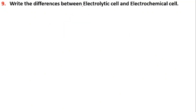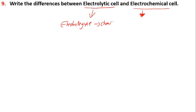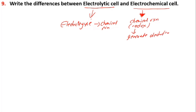The next question is about the electrolytic cell and the electrochemical cell. The electrolytic cell uses electricity to drive chemical reactions. The electrochemical cell converts spontaneous redox reactions to generate electricity. The main difference is: the electrolytic cell uses electricity to cause chemical reactions, while the electrochemical cell uses chemical reactions to generate electricity.